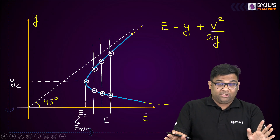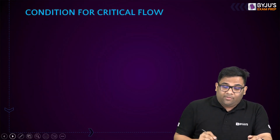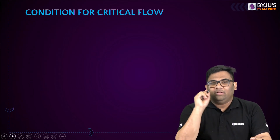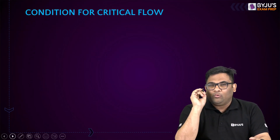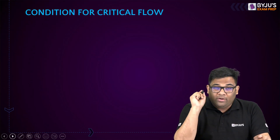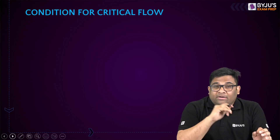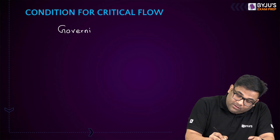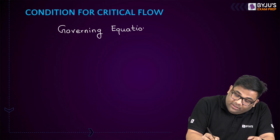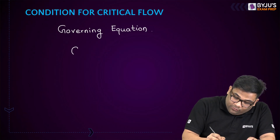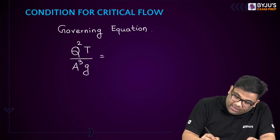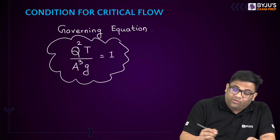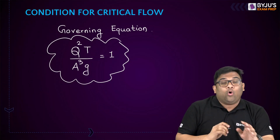Now, whatever questions are asked in the examination, let us first understand the condition for critical flow. There is an equation for critical flow — I am not going into the derivation. The governing equation of critical flow is Q squared T by A cubed G equals 1.